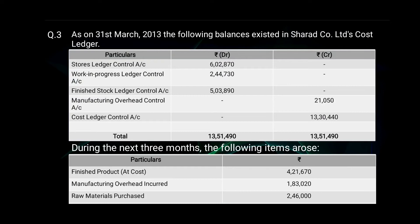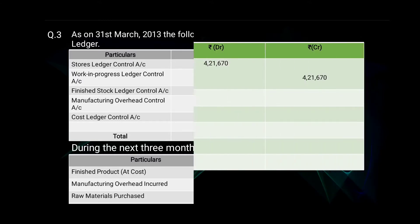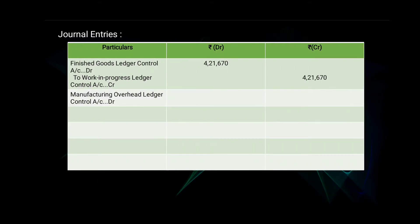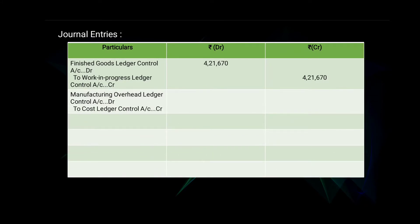Next is manufacturing overhead incurred; the amount is 1 lakh 83,020. The journal entry will be: Manufacturing Overhead Ledger Control Account debit, to Cost Ledger Control Account — amount 1 lakh 83,020 on the debit and on the credit side.